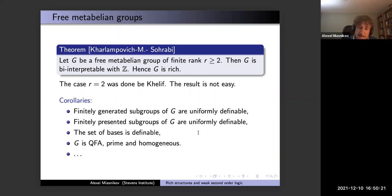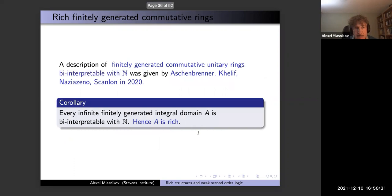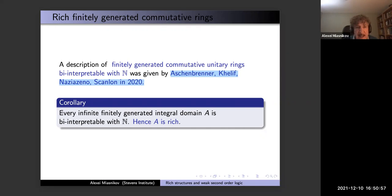Much more is known in the last two years about rings and fields. There is a description of finitely generated commutative unitary rings bi-interpretable with N — given by this team just a year ago. Every infinite finitely generated integral domain is bi-interpretable with N and therefore rich. So all finitely generated integral domains are rich, and as a consequence SL_n over such domains are also rich.